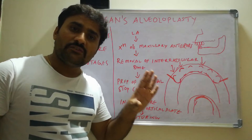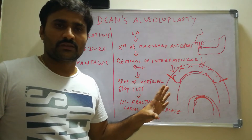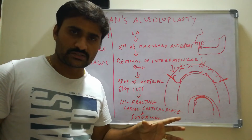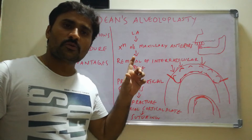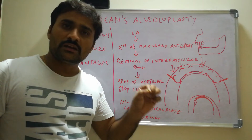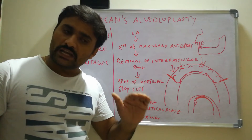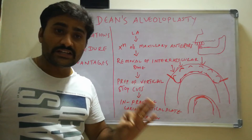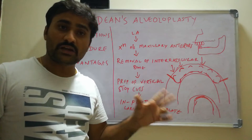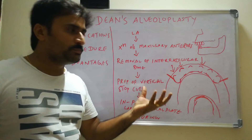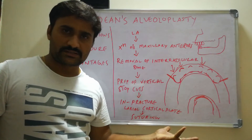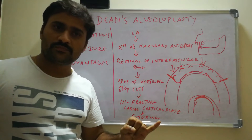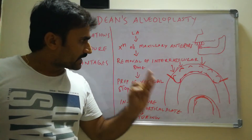One important thing to observe: there is no flap elevation in Dean's alveoloplasty. We are not going to remove or elevate any mucoperiosteal flap — there are no incisions. One obvious advantage of Dean's alveoloplasty is that there is no post-procedural resorption. When you elevate a flap for any procedure, there will be some post-procedural resorption, but that is avoided in Dean's alveoloplasty because we are not raising any mucoperiosteal flap — we work simply through the extraction sockets.